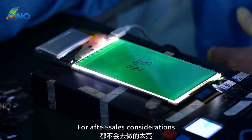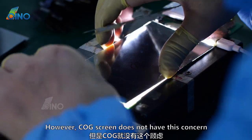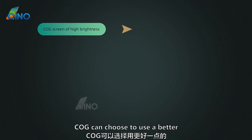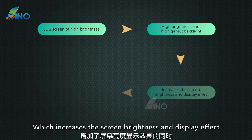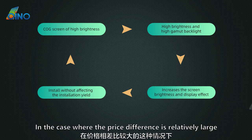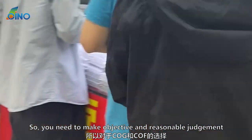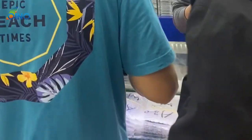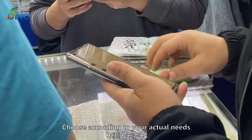A thicker high-brightness COF screen has a greater chance of IC bursting when installed, so factories will not make it too bright for after-sales considerations. However, COG screen does not have this concern. COG can choose to use better high-brightness, high-gamut backlight, which increases the screen brightness and display effect without affecting the installation yield. Therefore, where the price difference is relatively large, COG is also a good choice.